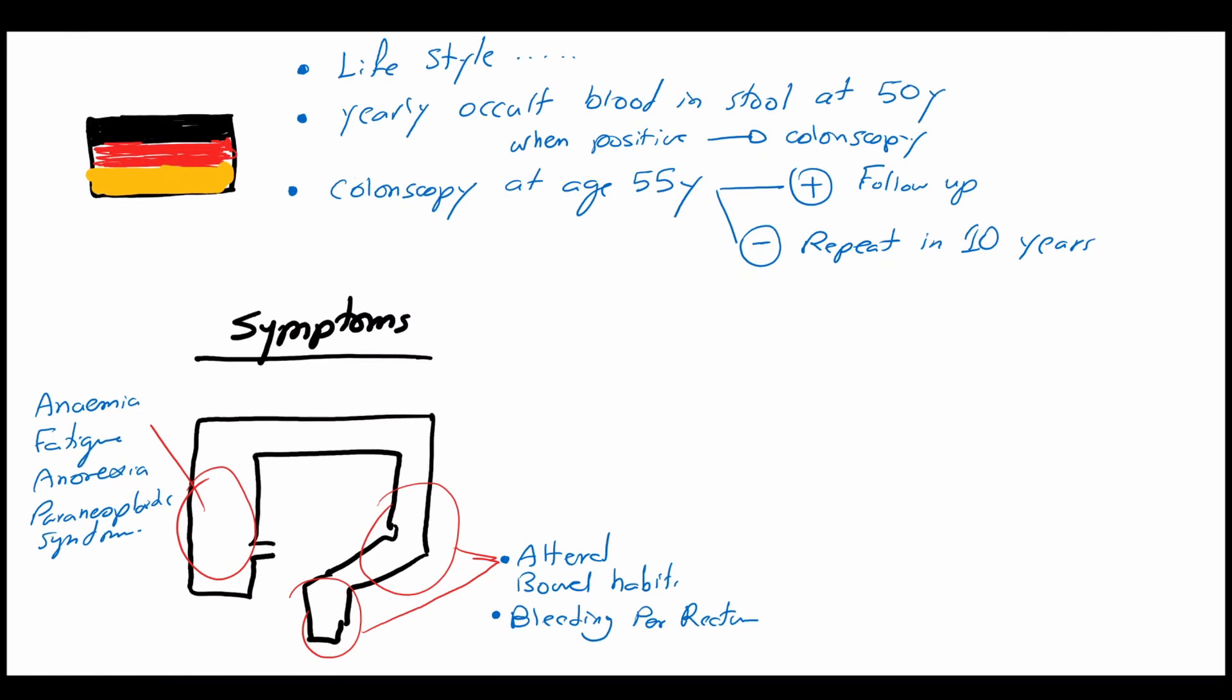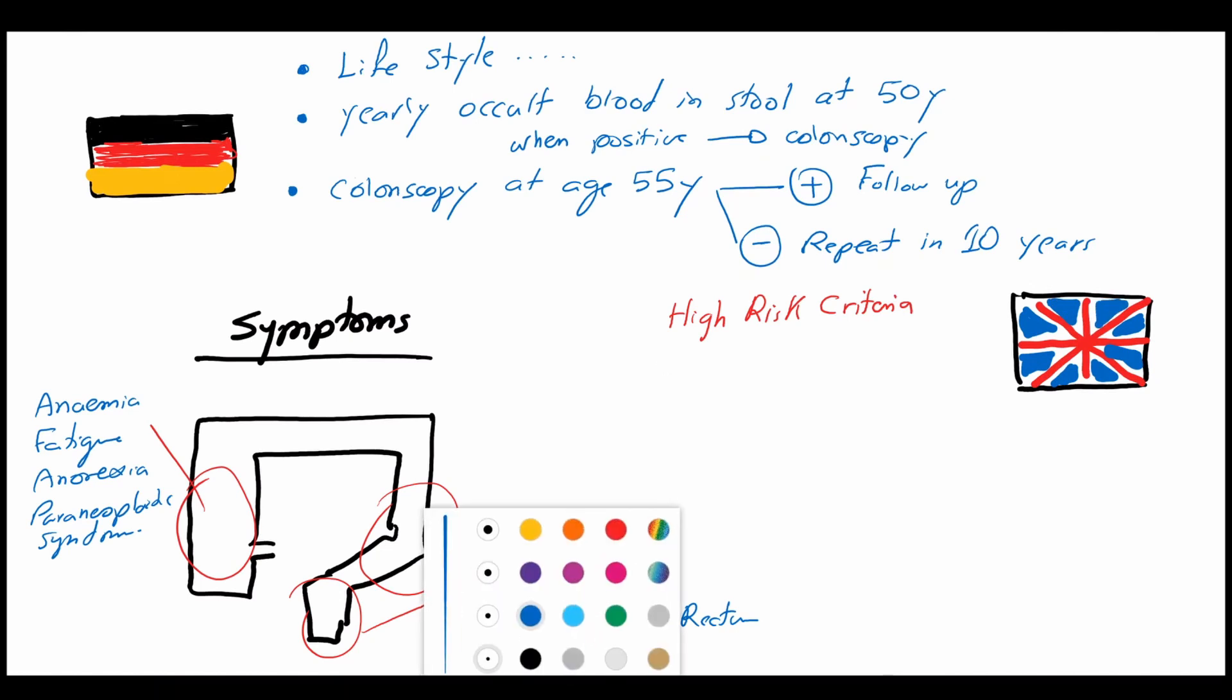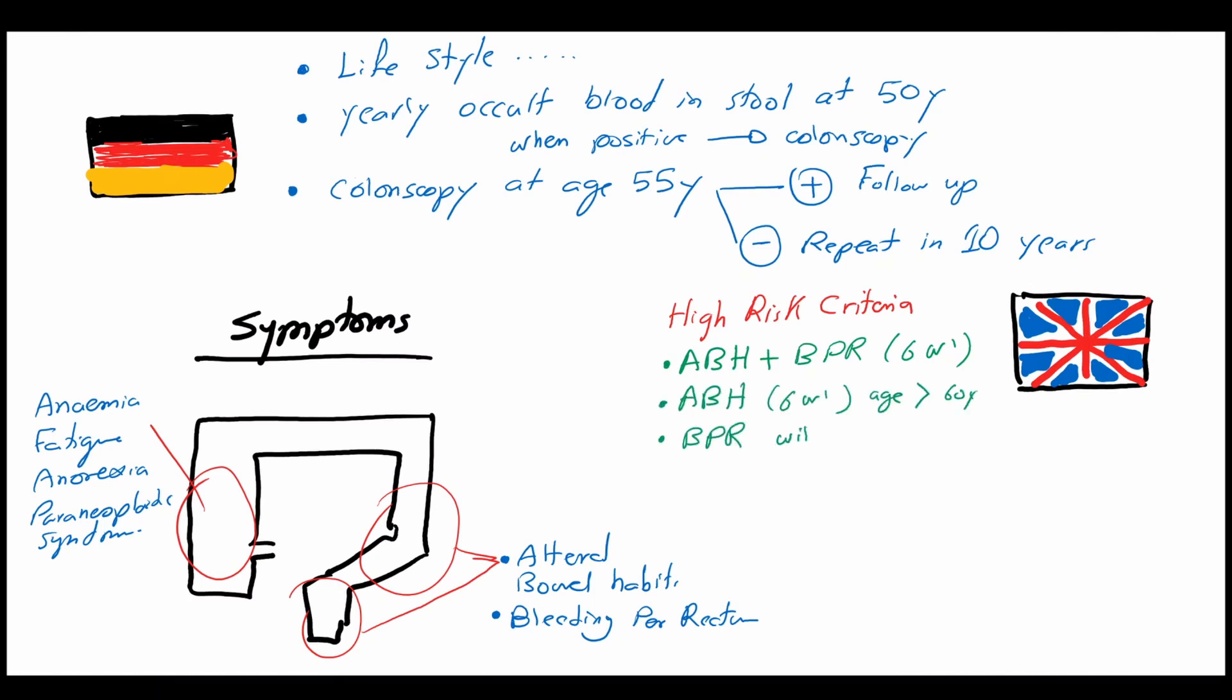According to the British guidelines, a high-risk criteria of colorectal carcinoma includes altered bowel habits and bleeding per rectum for 6 weeks, altered bowel habits for 6 weeks at age over 60 years old, bleeding per rectum at any age without anal symptoms such as pain, itching, hemorrhoids and discomfort, palpable right abdominal mass or rectal mass, iron deficiency anemia which is otherwise unexplained.